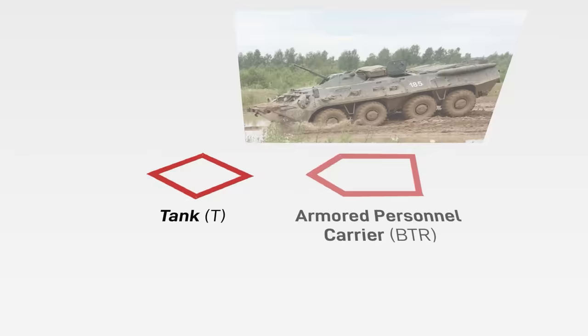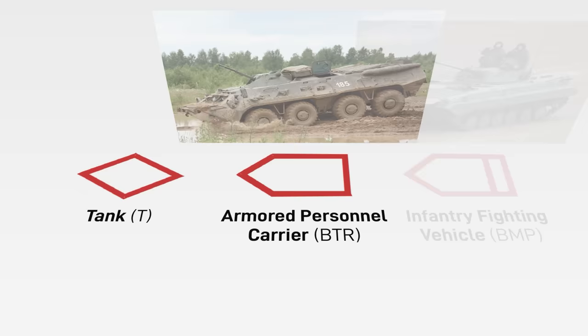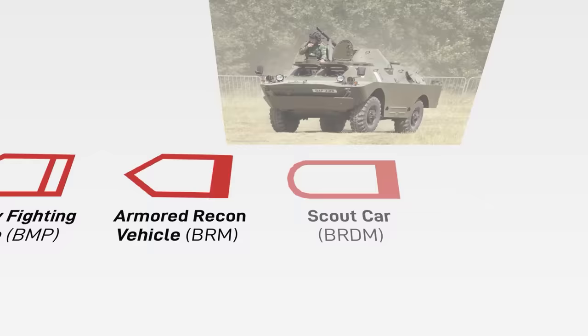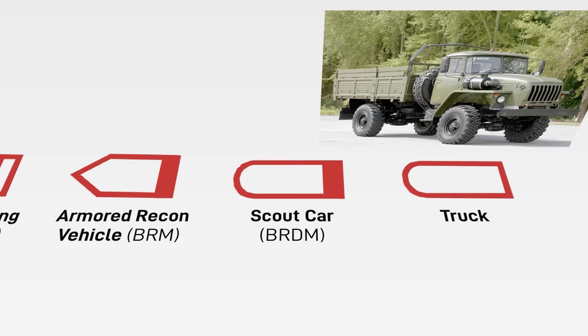In terms of vehicles, like I've mentioned, tanks are depicted as diamonds. Armored personnel carriers or BTRs are sort of a rectangular pentagon, while infantry fighting vehicles or BMPs add a line to the base. That line gets filled in solid when it's a BRM, which is essentially an infantry fighting vehicle used as a recon vehicle. And the point gets rounded off for a BRDM, which is a sort of scout car.